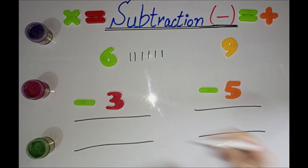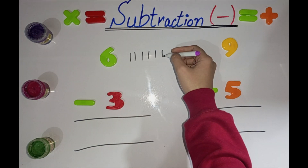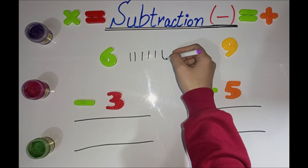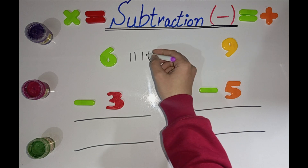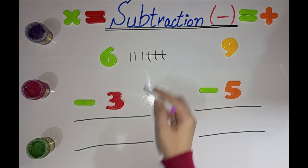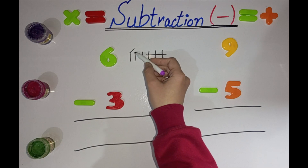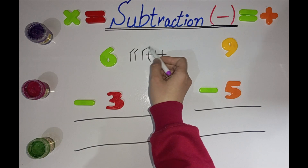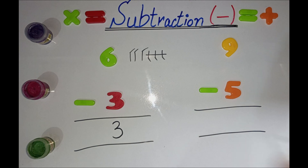What is this number? 3. Cut 3 from these lines. 1, 2, 3. What will we get? 1, 2, 3. Write 3 here. Yay!